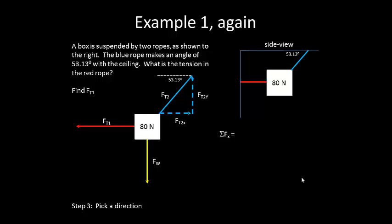Since we're looking for FT1, it makes sense to try to solve for the x direction, the sum of the forces in the x direction. And we're going to write down a sum of forces equation. So the sum of forces in the x direction must be equal to FT2x minus FT1, which needs to equal zero since we have an object in equilibrium.